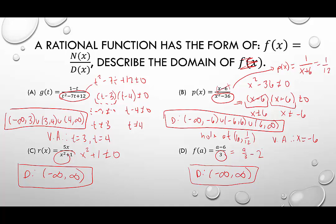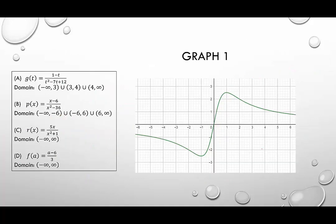Now we match the domains to their respective graphs. Graph 1 has no breaks in the domain, so it can't be a or b. Letter c has no restrictions and is not linear, while letter d is a straight line. So graph 1 must be the graph of letter c. We can confirm by plugging in 0: we get 0 over whatever, which is 0 — and the origin appears on the graph. Graph 1 is letter c.